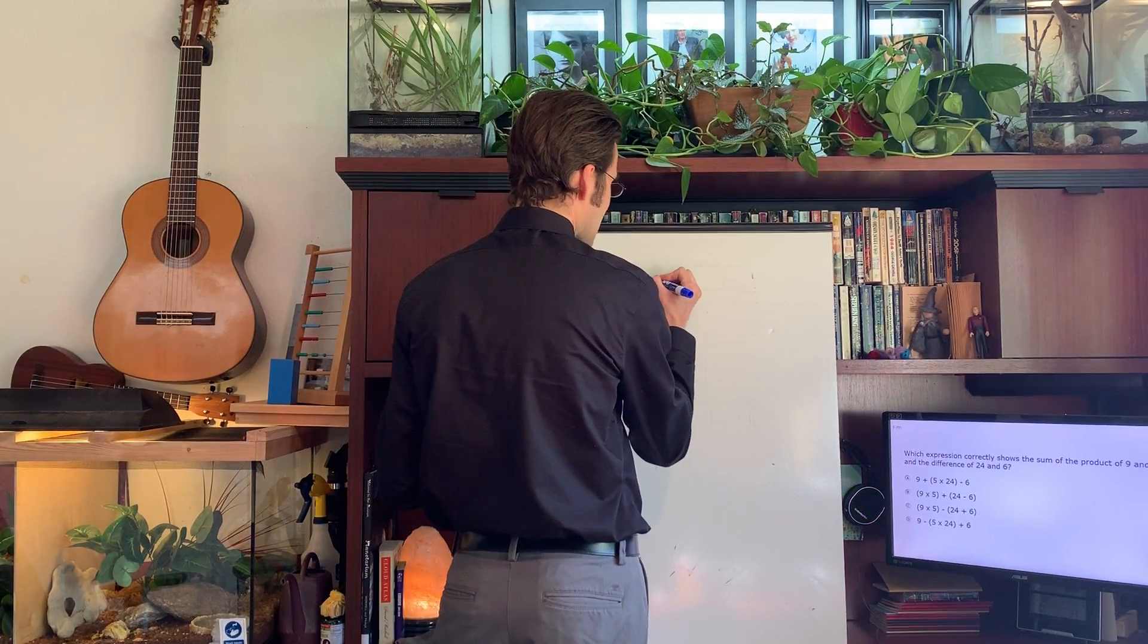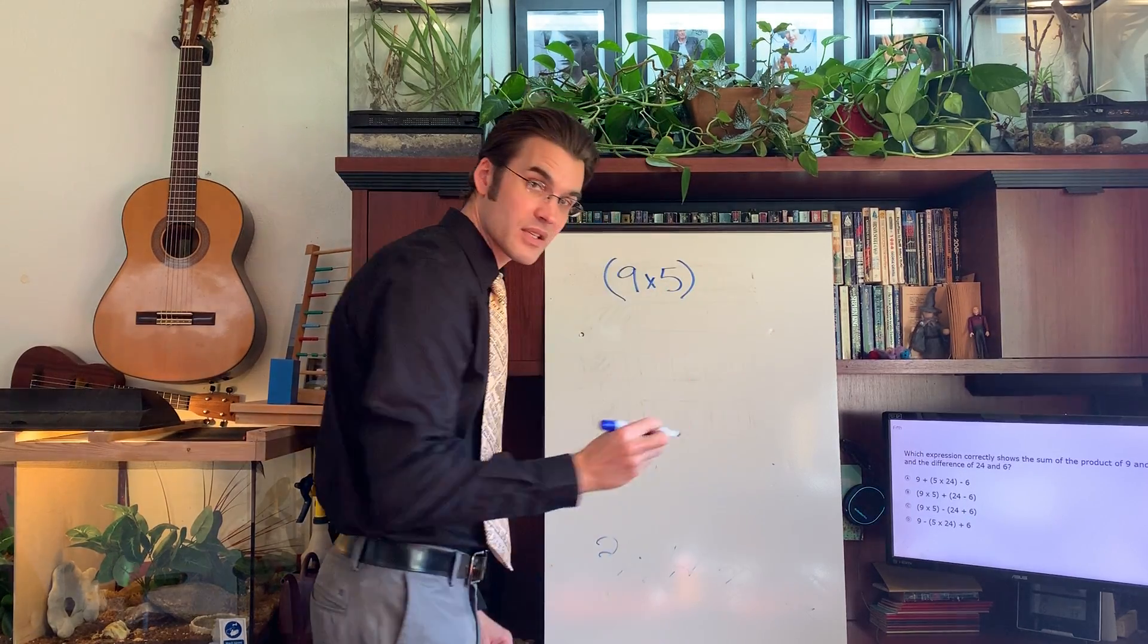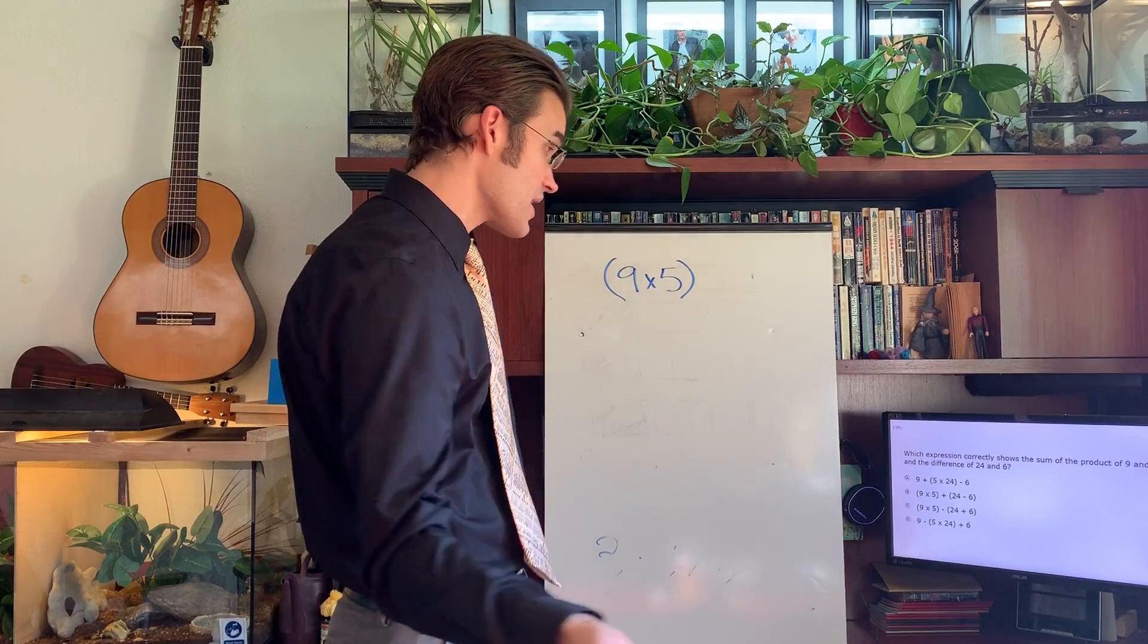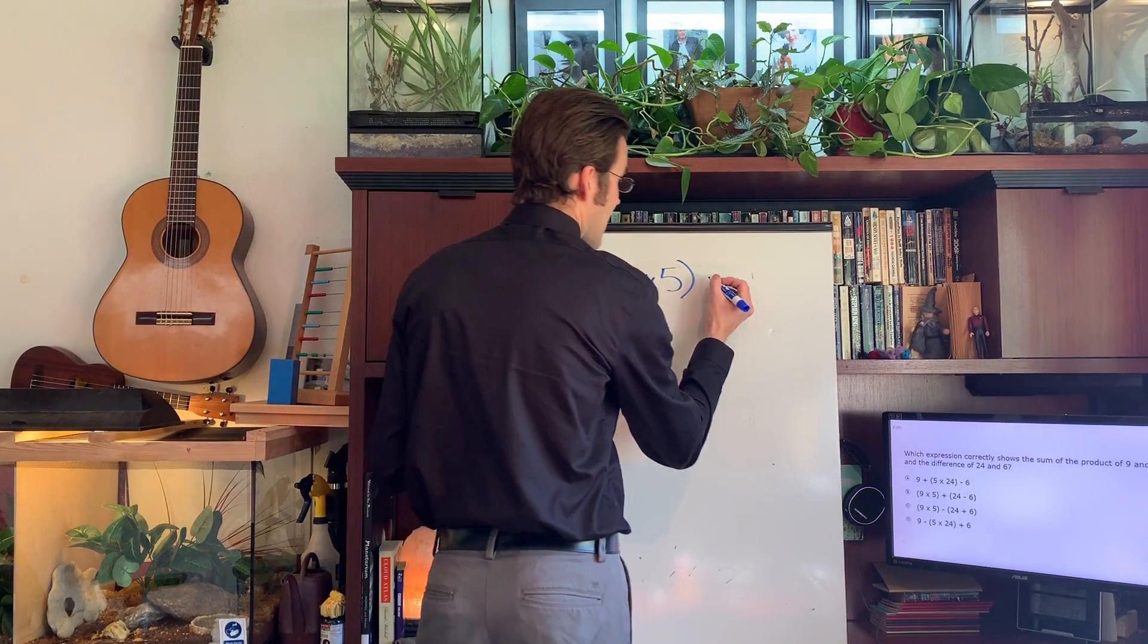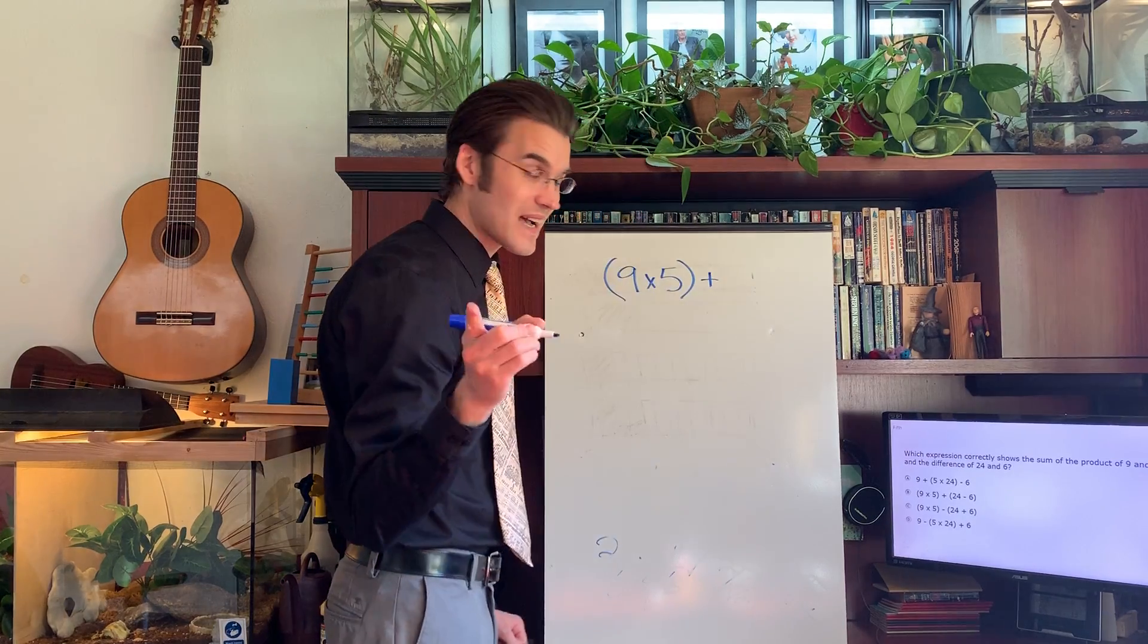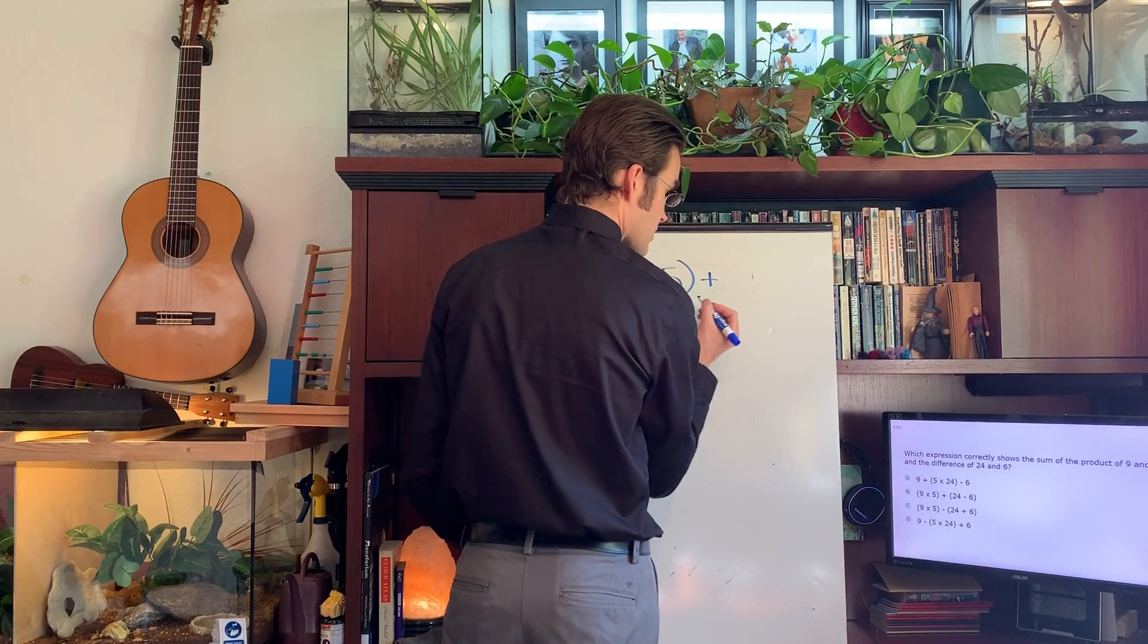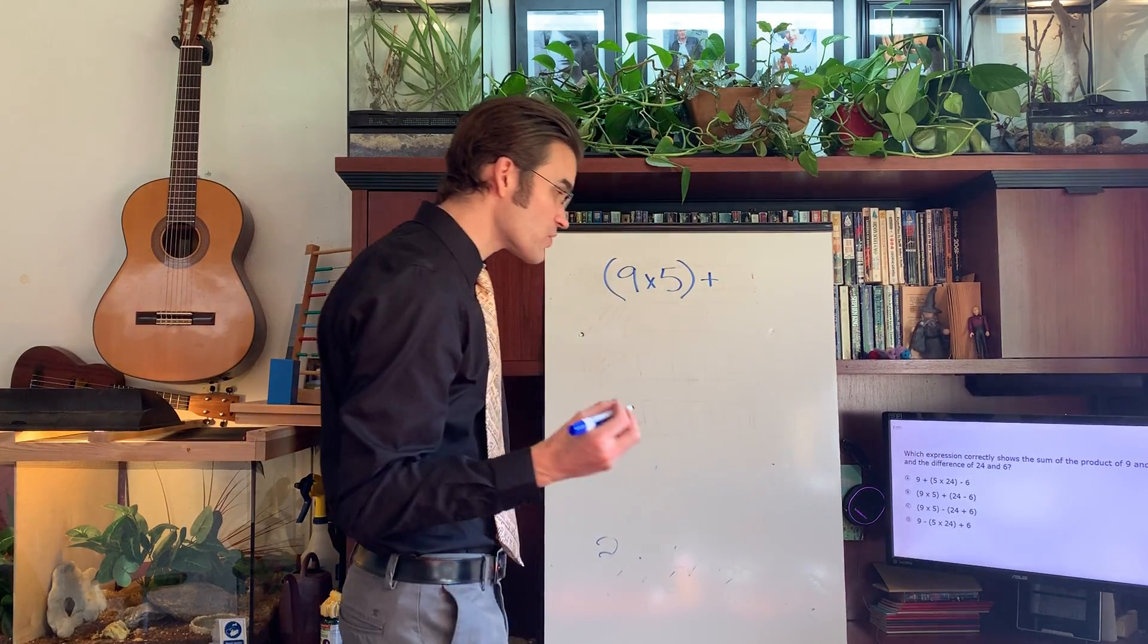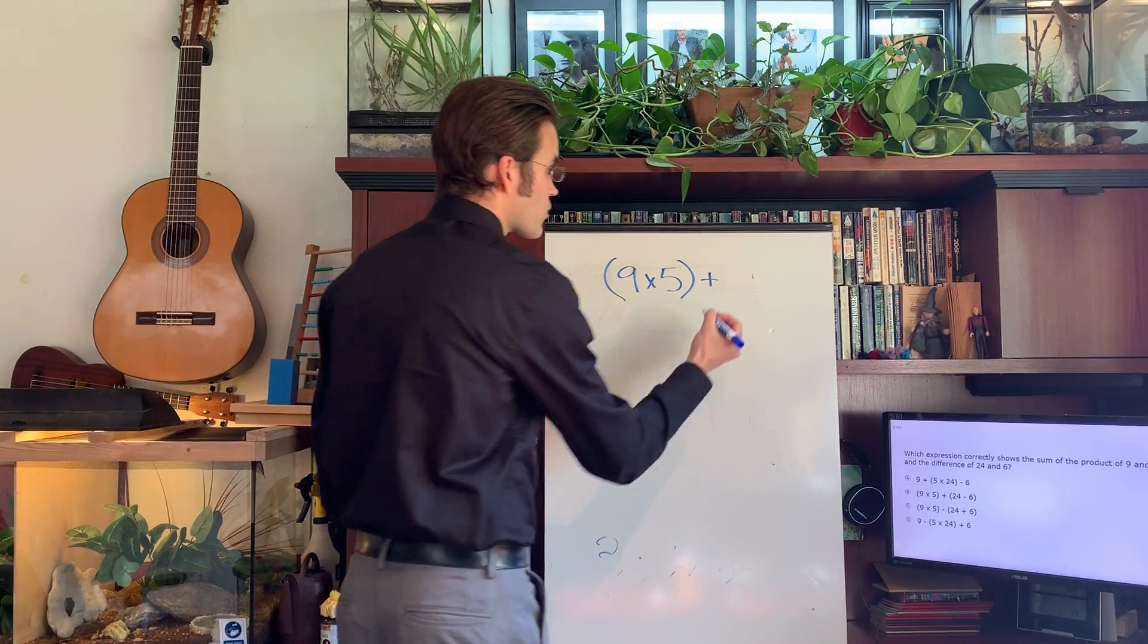It would be nine times five, right? Because product is multiplication. The sum, we're going to have a plus sign, and the difference between 24 and six.